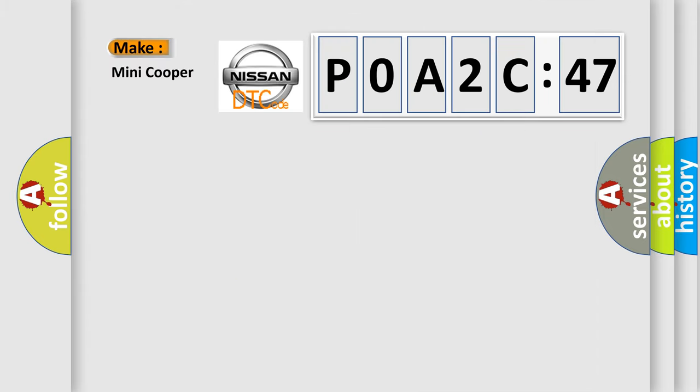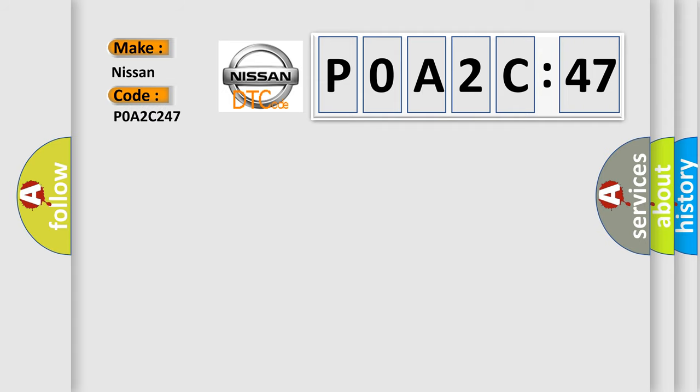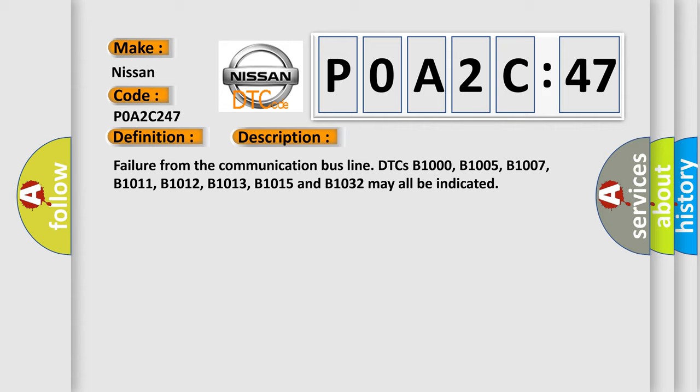And now this is a short description of this DTC code. The 5V reference to the longitudinal accelerometer is less than 4.4V or greater than 5.6V. The longitudinal accelerometer output is greater than 1.5g or less than minus 1.5g for 1.2 seconds.